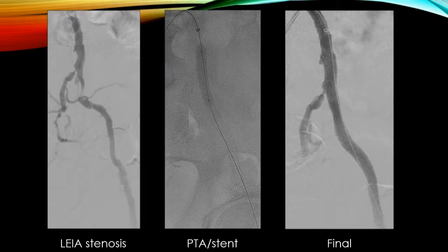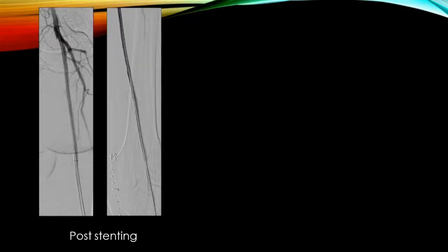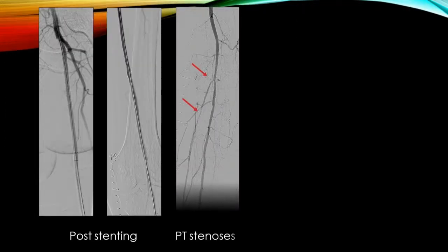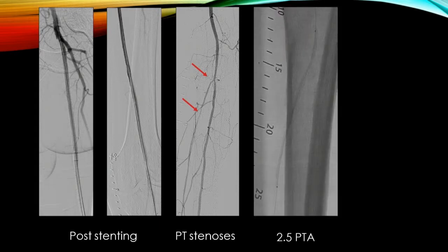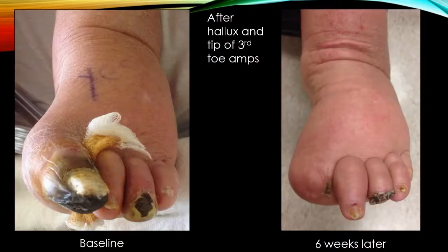On the angiogram, he had multi-segment disease with a critical left external iliac artery lesion that we stented, and then a very long SFA lesion, and in addition to that an occlusion of the anterior tibial artery and sequential lesions in the TP trunk and PT. We crossed this with the Crosser once confirmed intraluminal, ballooned, and stented to restore inflow to the popliteal level. This was actually the first patient we treated in the Lutonix Below the Knee CLI trial, and he was randomized to DCB and treated with a 3.0 DCB with a very nice angiographic result.